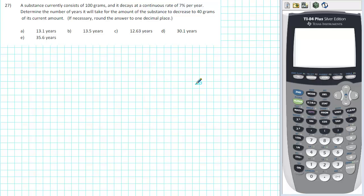A substance currently consists of 100 grams and it decays at a continuous rate of 7% per year. Determine the number of years it will take for the amount of the substance to decrease to 40 grams of its current amount.